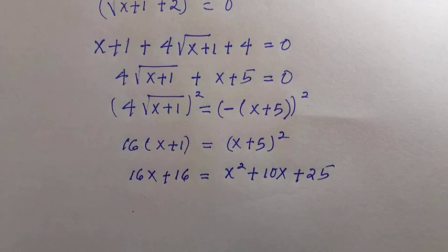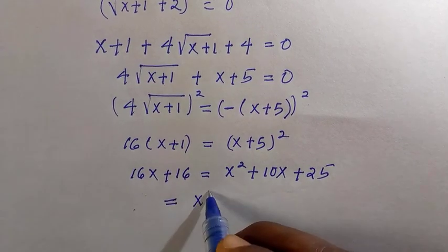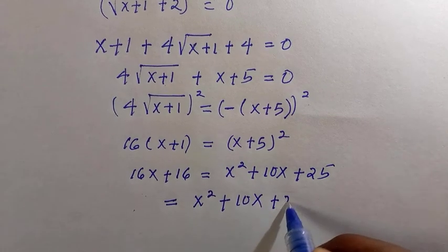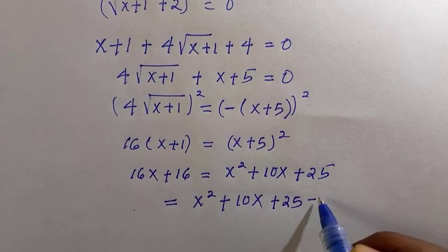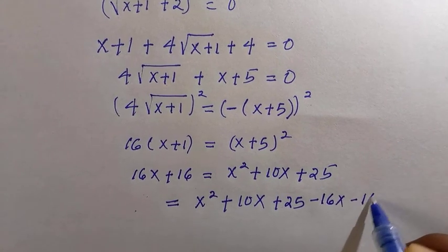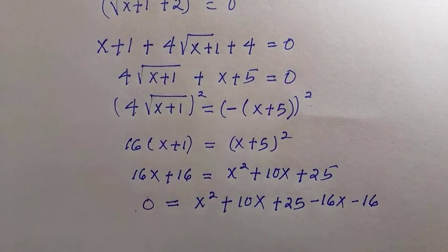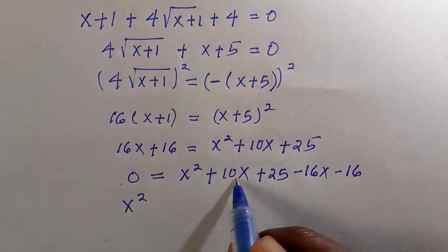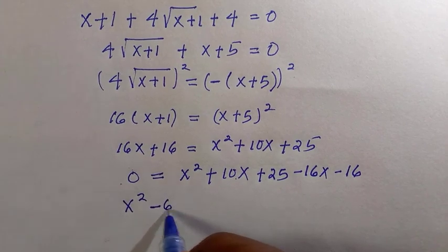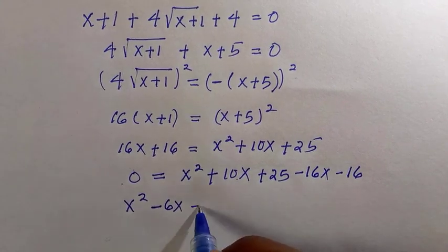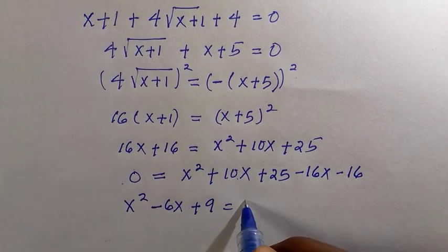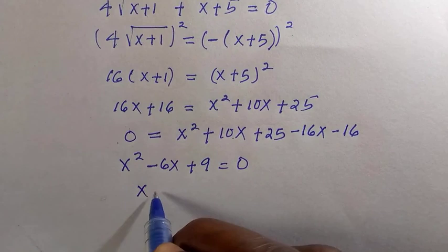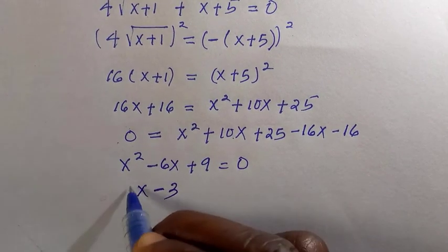If I transfer the left-hand side to the right-hand side, we have x² + 10x + 25 - 16x - 16 = 0. Then we have x², this and this becomes -6x, and this and this is +9 = 0. We know here is a quadratic equation, so if we try to factorize this, it becomes (x-3)² = 0.